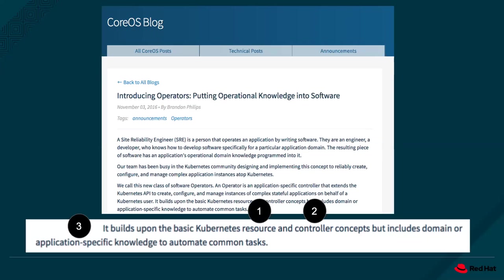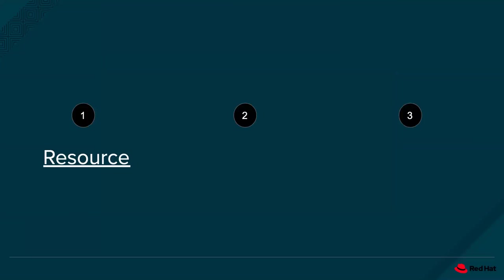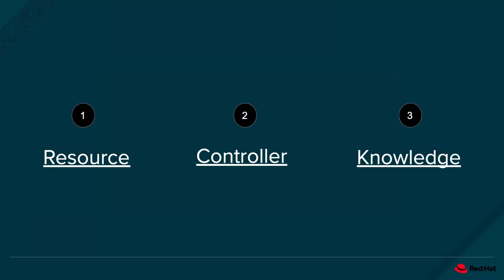An operator is a type of software that builds on three concepts: a Kubernetes resource — specifically a custom resource — a Kubernetes controller, and knowledge. A Kubernetes resource, a controller, and knowledge.